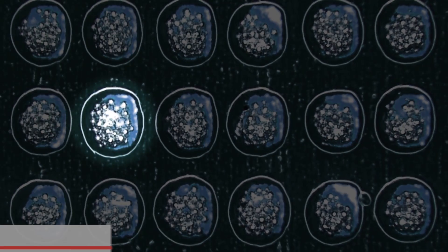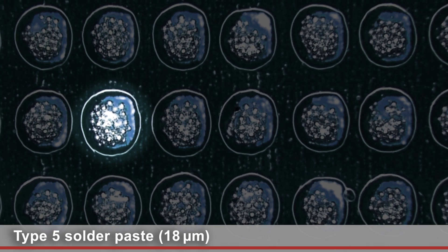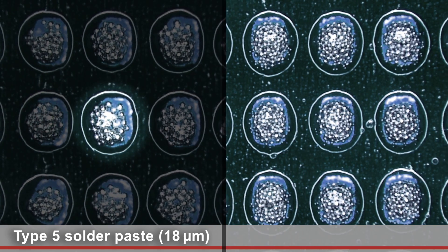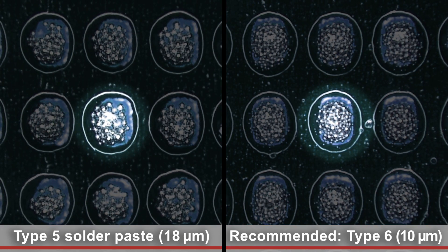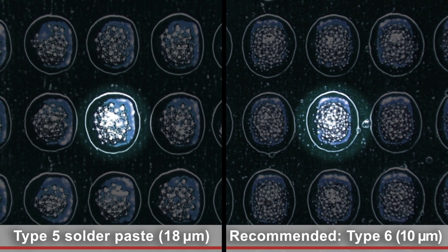While type 6 solder paste is recommended for placing 0201 components, acceptable to good results may also be possible with type 5 paste depending on the requirements for the remaining components.